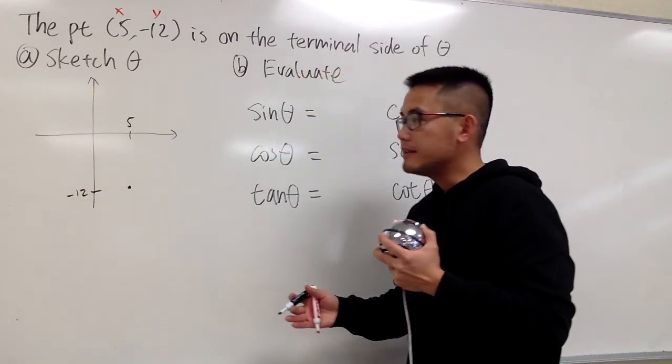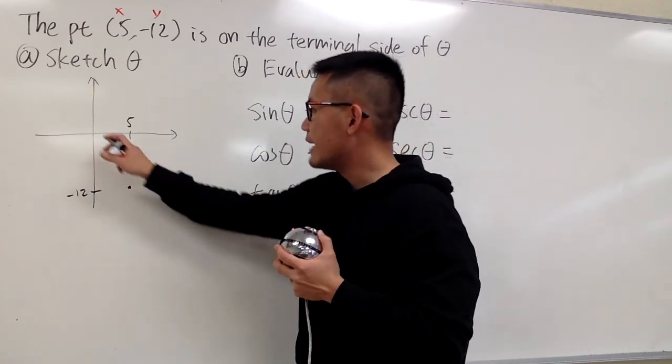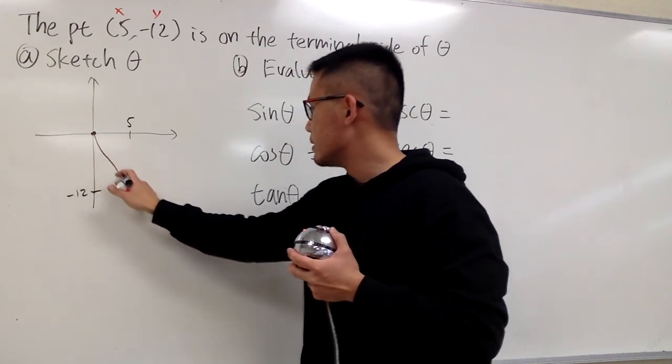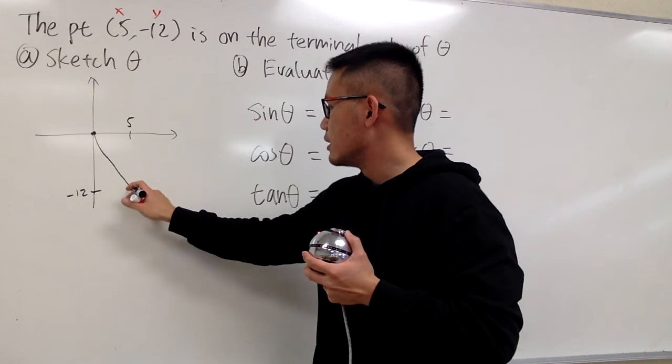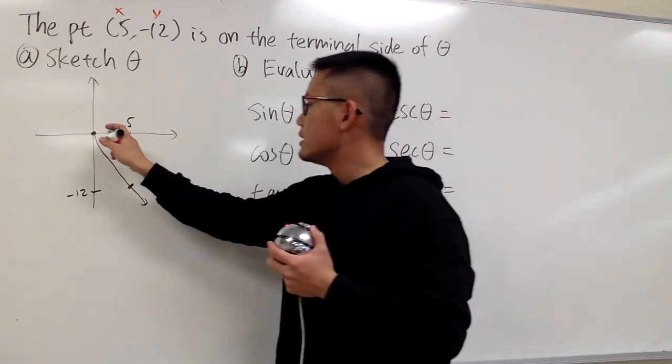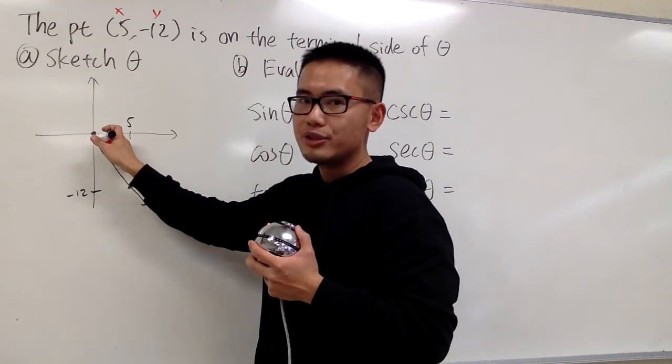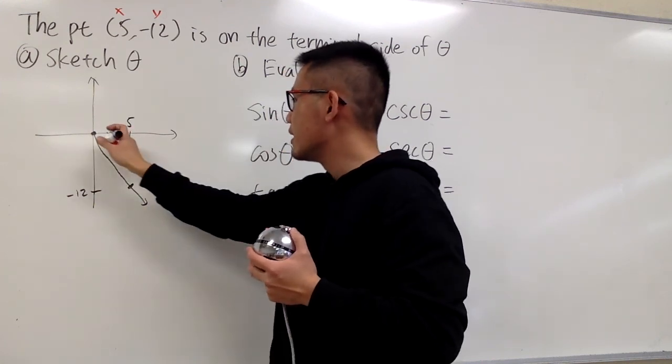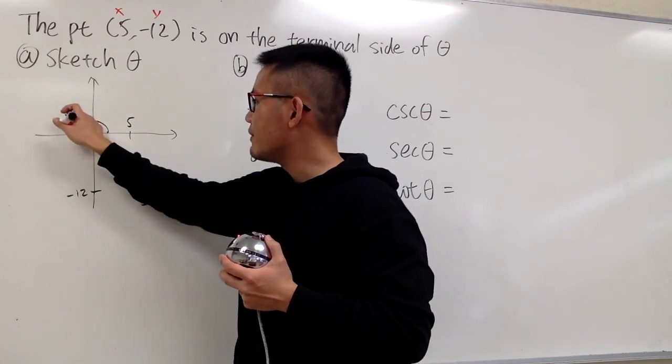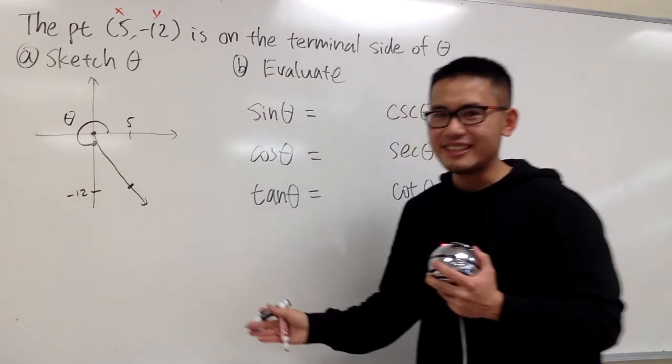And for the terminal side, you know, this point is on the terminal side. That means you go from the origin and you draw a ray like this, pass through this point. And the angle theta, right here, it is measured from the standard position, the positive x-axis, and you rotate counterclockwise. And here you have it. That's the angle theta. That's the picture for it.